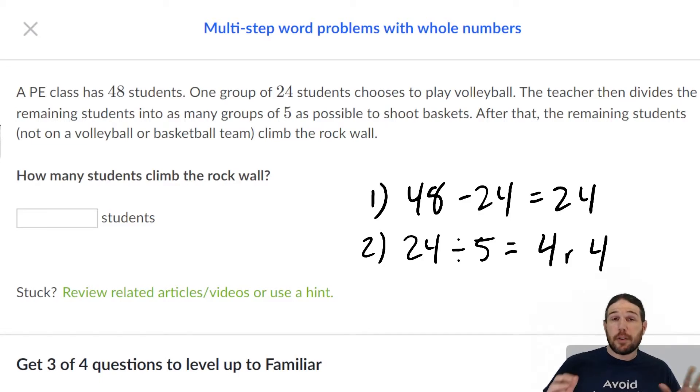So each one of the groups of students shooting hoops will be four, but that's not what it's asking. It's asking how many are left over when all is said and done to go climb the rock climbing wall, and it looks like that is also four.